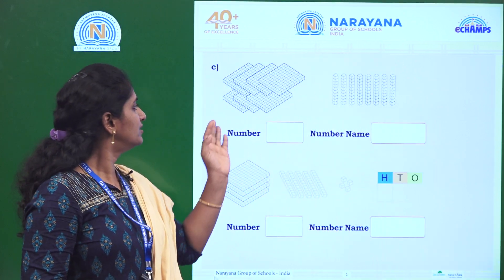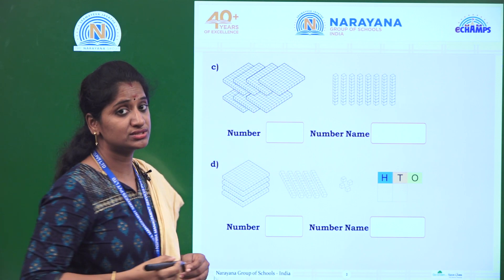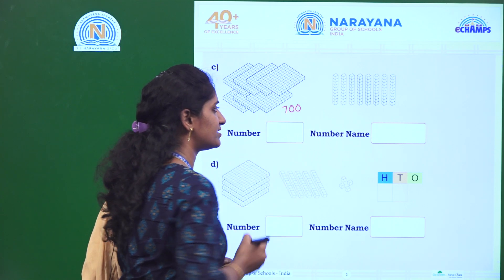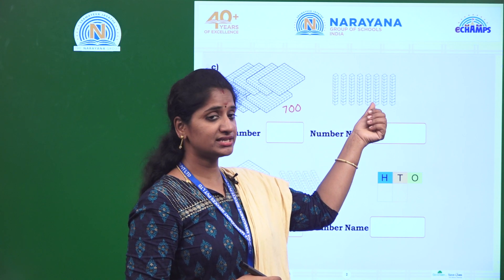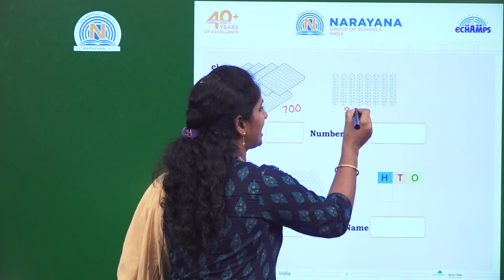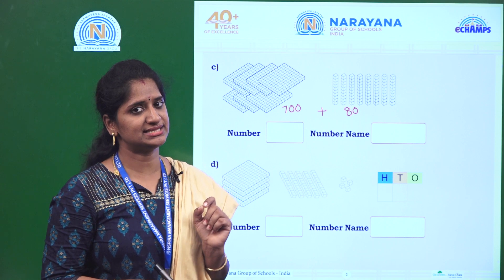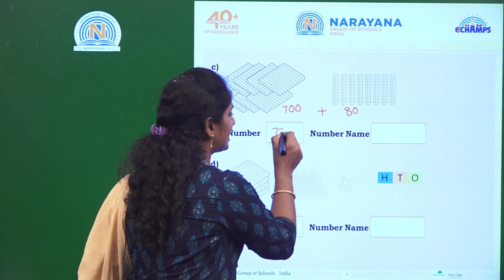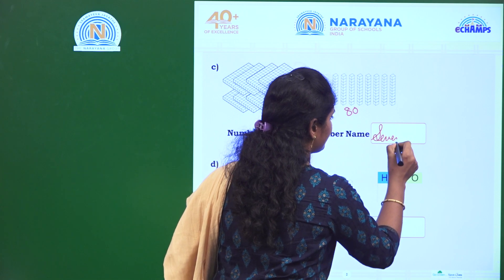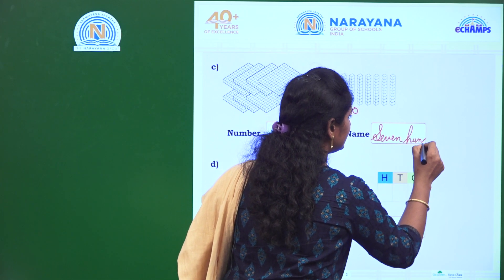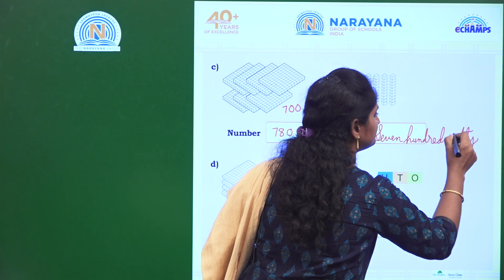The next question. How many bricks here? 1, 2, 3, 4, 5, 6, 7. So, how many hundreds? 700. Right, write here 700. How many tens they have given? 1, 2, 3, 4, 5, 6, 7, 8. How many tens? 8 tens means 80. Is there any ones? No ones. So, what is the number? 780. The spelling of 780: S-E-V-E-N, seven hundred. H-U-N-D-R-E-D, and E-I-G-H-T-Y, eighty. 780.